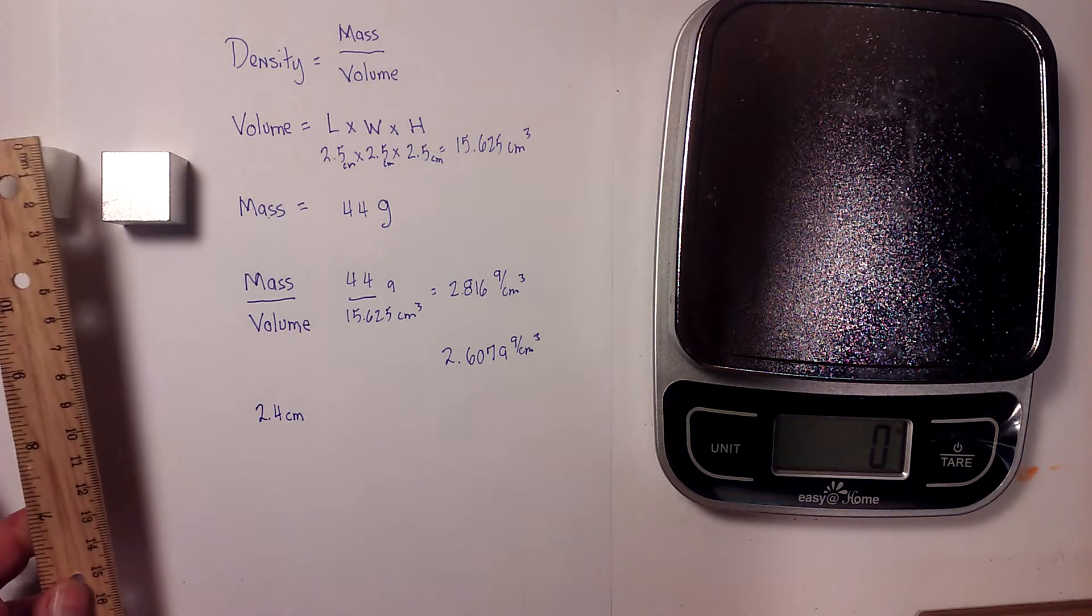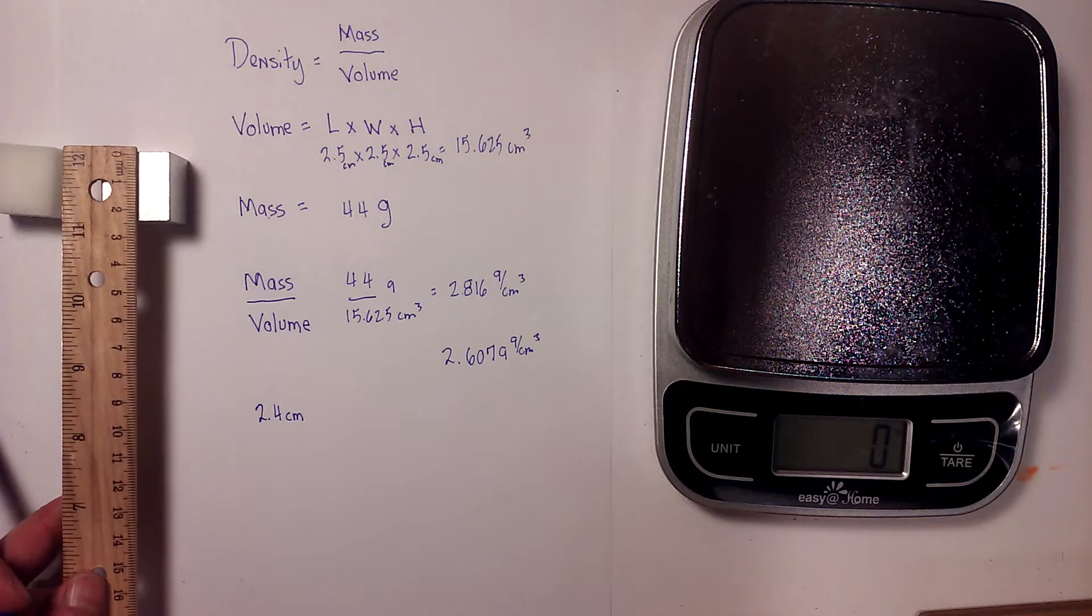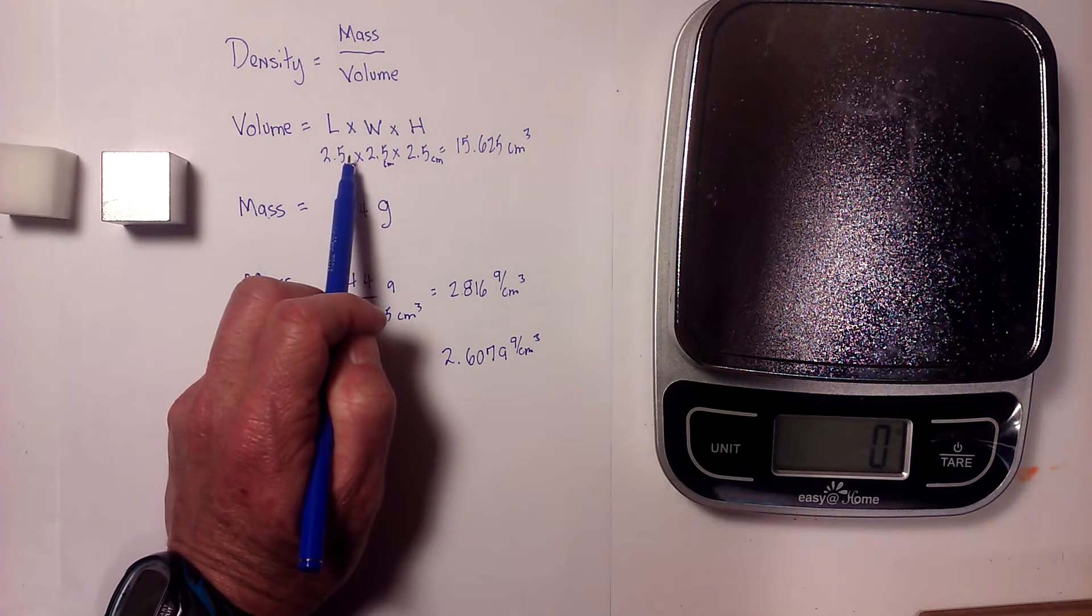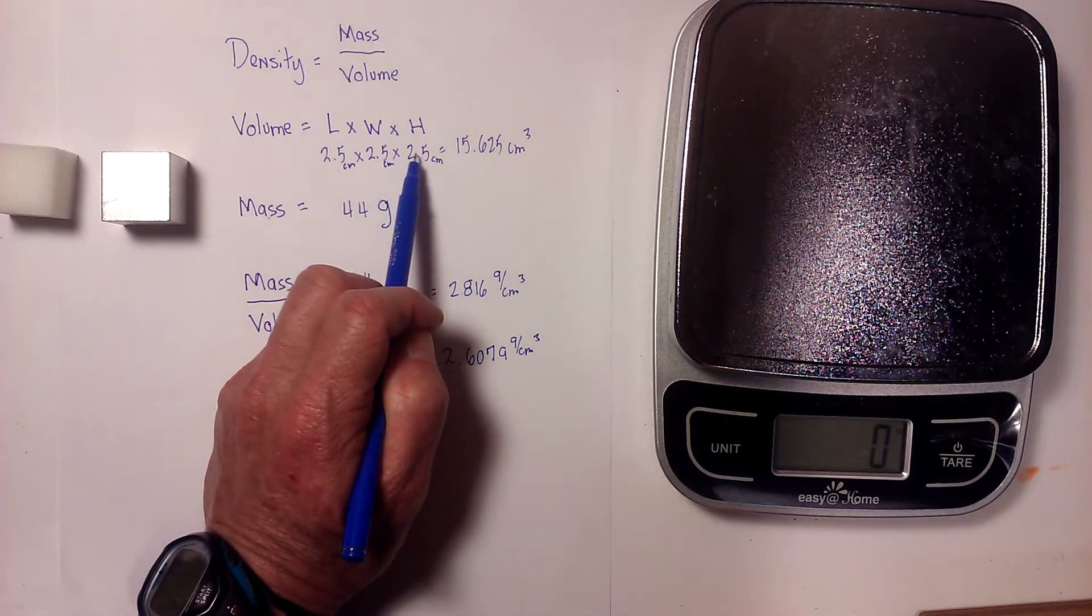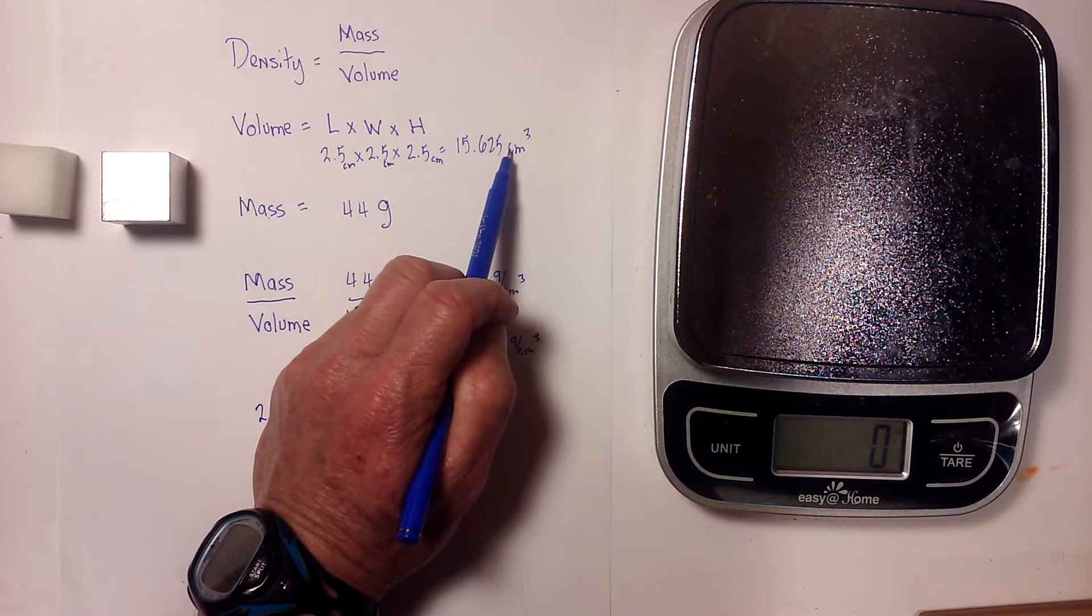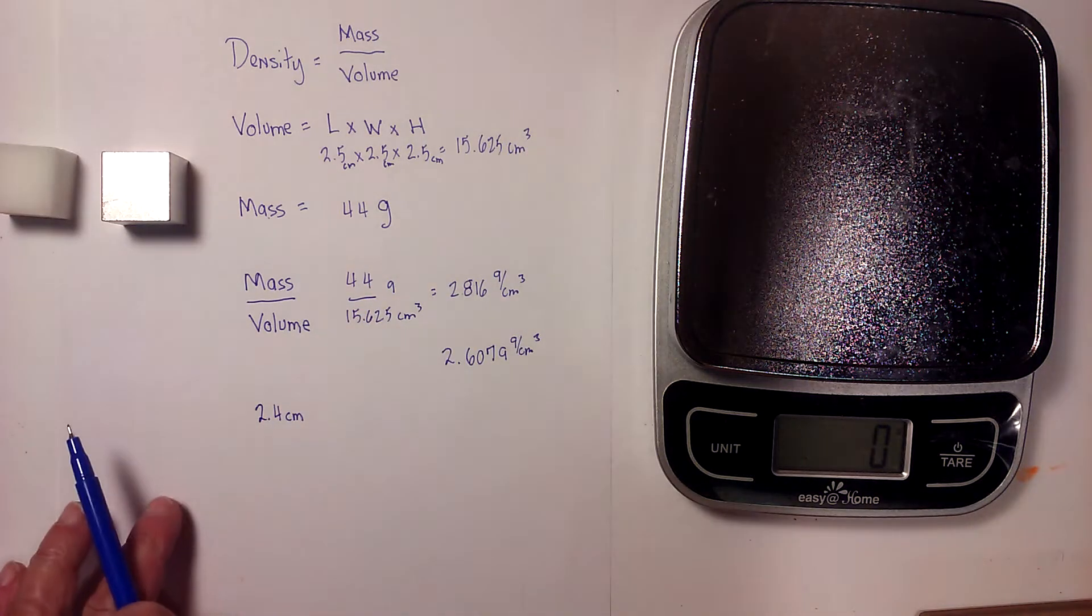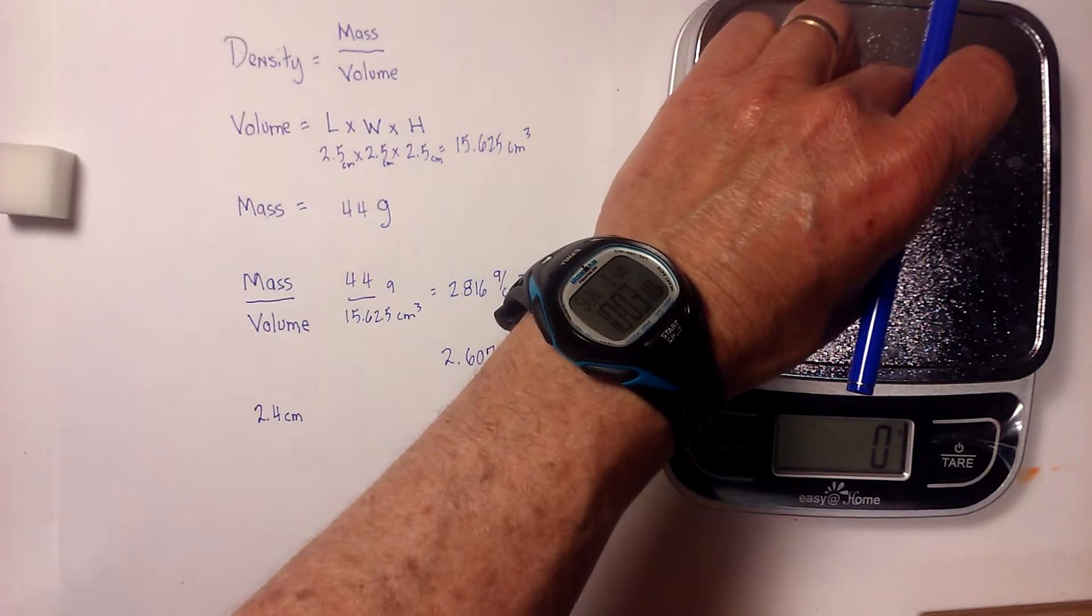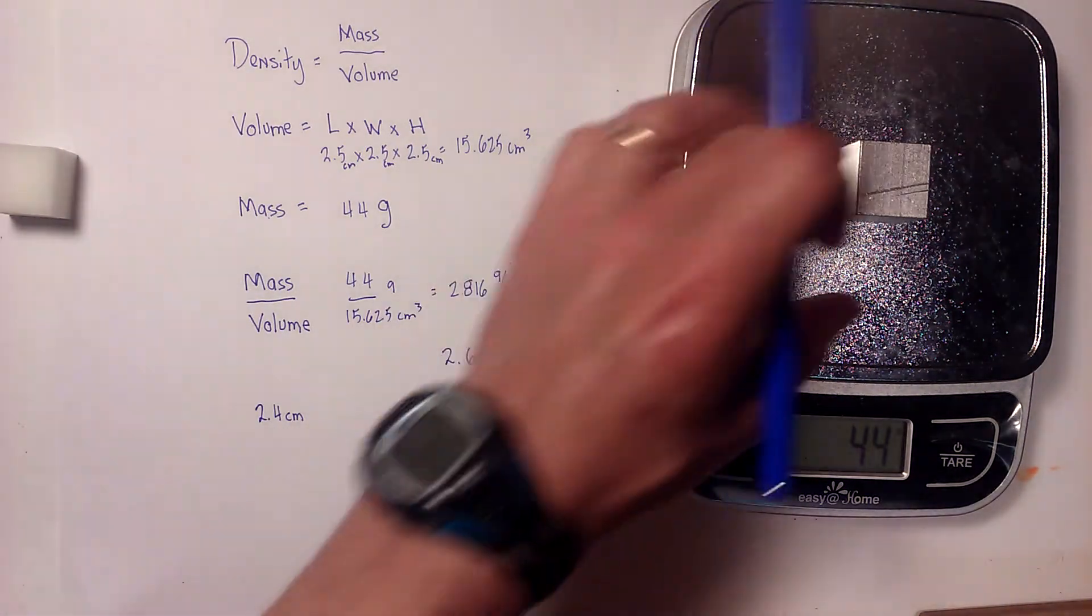I went ahead and measured one side. Since this is a cube they are all equal, and that was 2.5 centimeters. So that's 2.5 times 2.5 times 2.5, which equals 15.625 centimeters cubed. Then I calculated the mass just by putting it on the scale and it came to 44 grams.